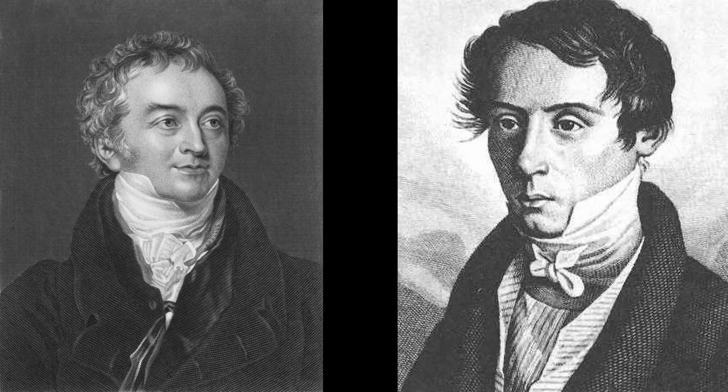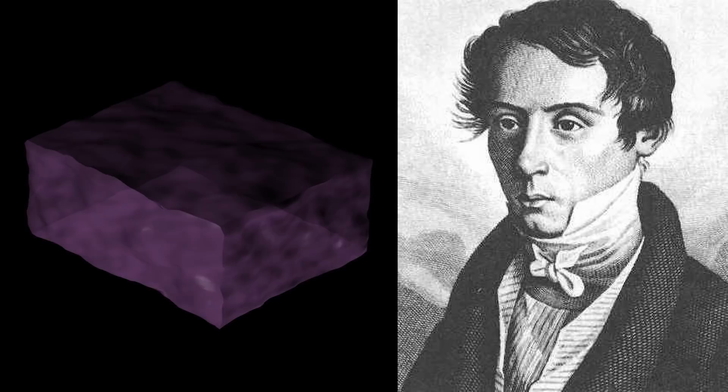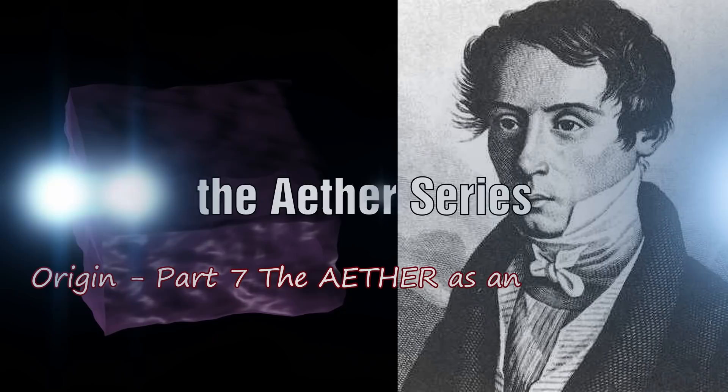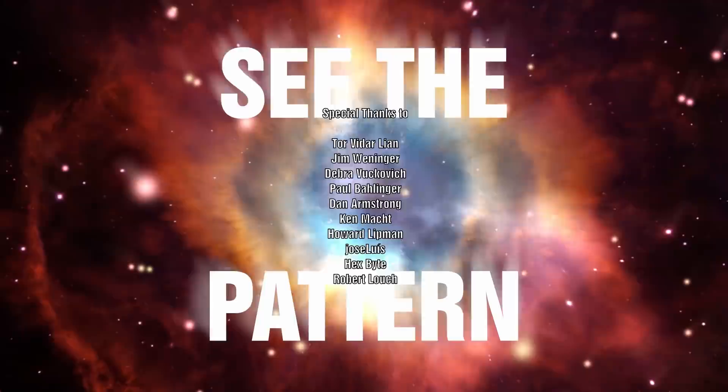In the previous episode, we saw how both Young and Fresnel had put forward the view that the vibrations of light are performed at right angles to its direction of propagation. Fresnel also pointed out that this might be explained by assuming that the ether possesses the power of resisting attempts to distort its shape, and could be likened to an elastic solid. After Fresnel's death, this concept was developed further, and this is what we will examine in this episode.